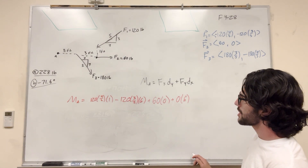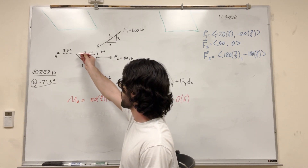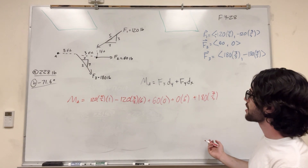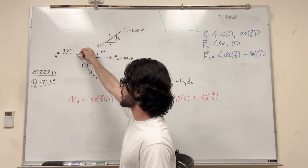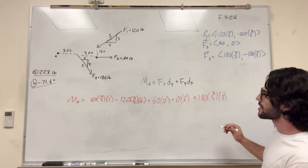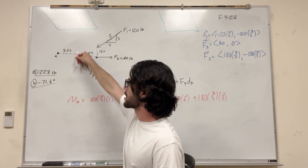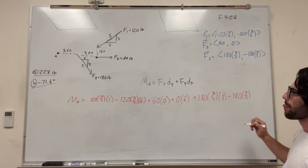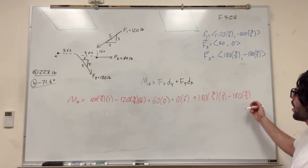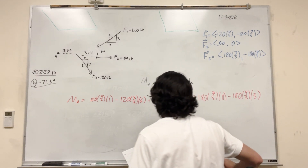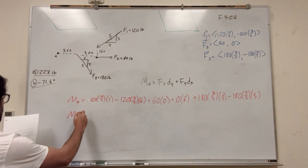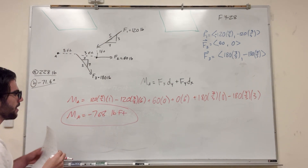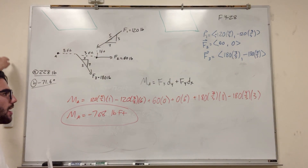Force 3: for the x direction, it's 180 times 3/5, but its distance in the y direction is 0, so that gets dropped too. For the y direction, the force is pulling in a way that makes us go clockwise, so we subtract. That's negative 180 times 4/5, multiplied by the distance in x, which is 3 feet. Plugging it all into the calculator, the moment around A equals negative 768 pound-feet. The negative tells us we're rotating in the clockwise direction.